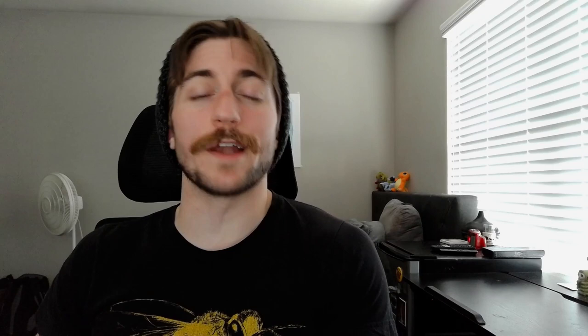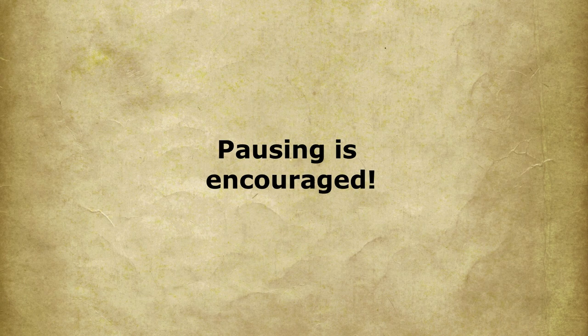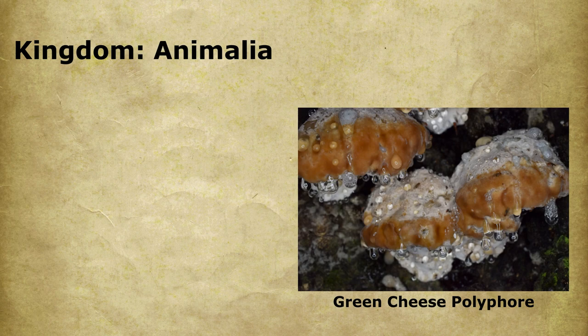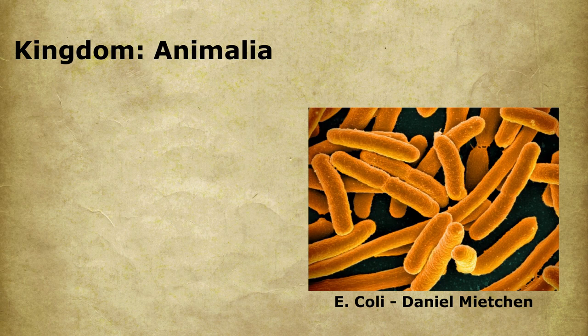I think it would be easiest just to dive right into an example. So let's do one that we all should be familiar with: humans. Humans and all other animals are found in the Kingdom Animalia, which should be easy enough to remember. Other kingdoms include Plantae, which are the plants; Fungi, which are the fungi; and Bacteria — there are actually multiple different kingdoms of bacteria. But for now, we're going to focus on Kingdom Animalia.